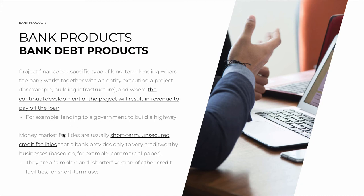Another type is money market facilities — a type of credit facility that is usually short-term and unsecured. These are usually only provided to very creditworthy businesses, based on commercial paper. When I say very creditworthy, I mean it. This is, for example, Apple saying to the bank, hey, we need $200 million for a quick project and we'll pay you back in two months. They are a simpler and shorter version of other credit facilities, but because they're unsecured, they really are just for very creditworthy businesses. If you are Joe's Bakery, you are not going to get this.